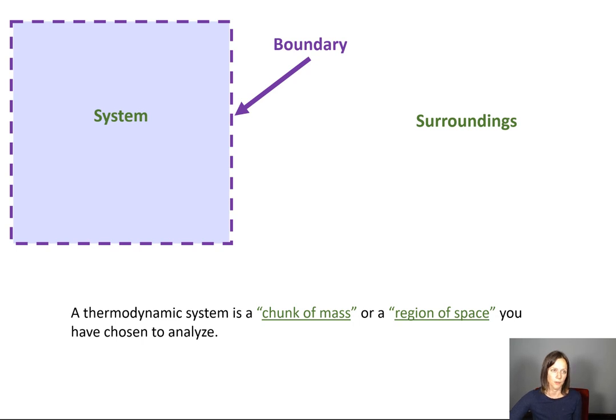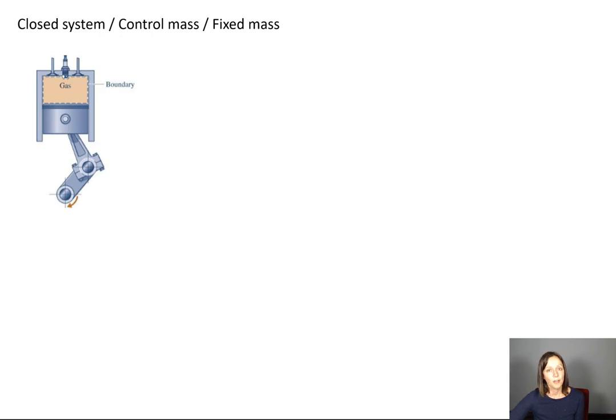So let's look at the first one, the chunk of mass one. It's what we refer to as a closed system. Sometimes you'll hear this referred to as a control mass. Less commonly, you might see it referred to as a fixed mass. All three of those terms mean the same exact thing. So here we've got a piston cylinder and you'll become very adept at solving piston cylinder problems in this class.